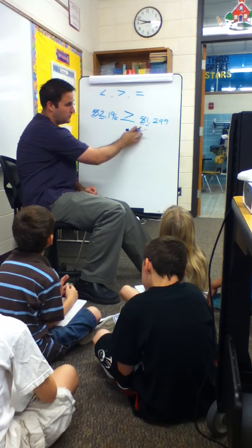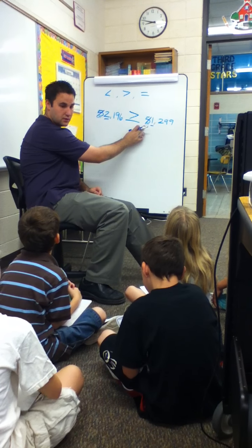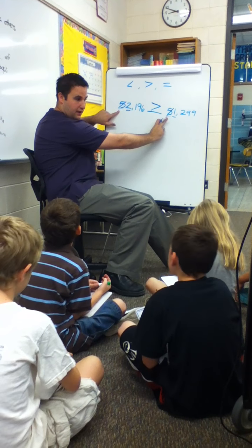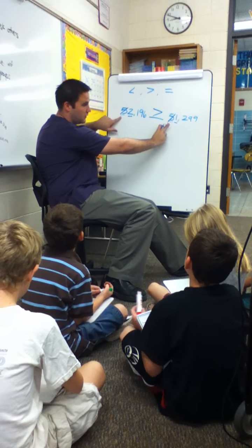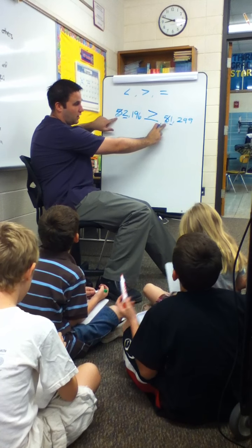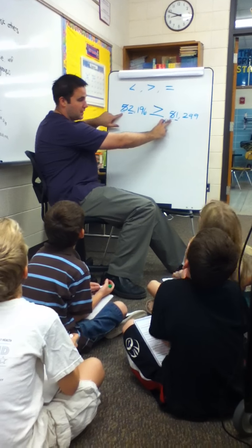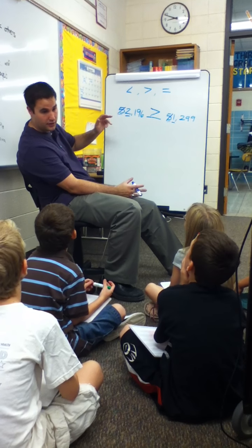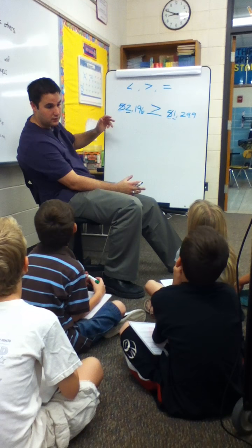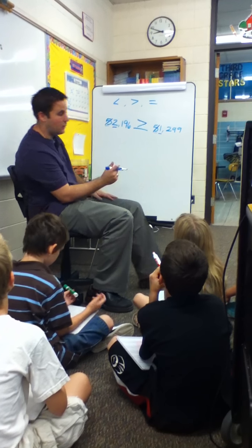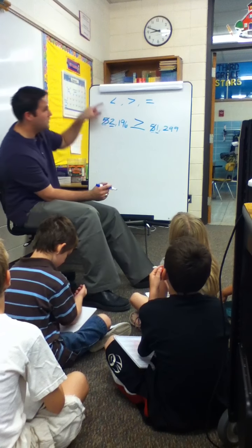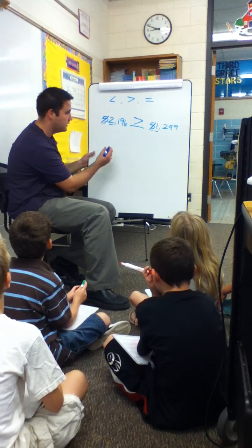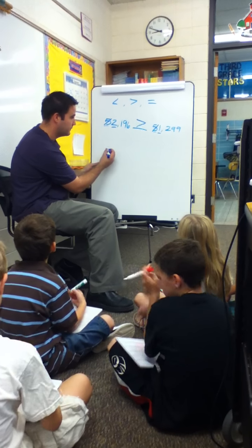So start all the way to the left. Compare the greatest digit value and then cross them out if they're the same. You might get an answer right away. And then you're done. So I want you to write one of these symbols on your board for this next problem.